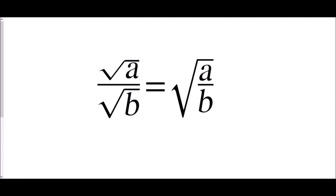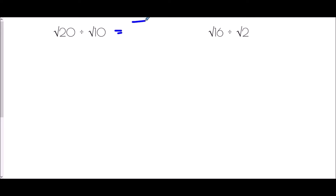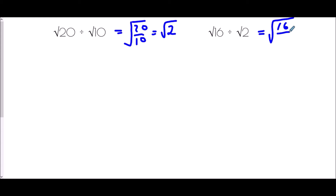So we can use that with real surds. Root 20 divided by root 10 — I can write that as a single square root: root of 20 over 10, which is root 2. Root 16 divided by root 2 — that's root of 16 over 2, which is root 8.